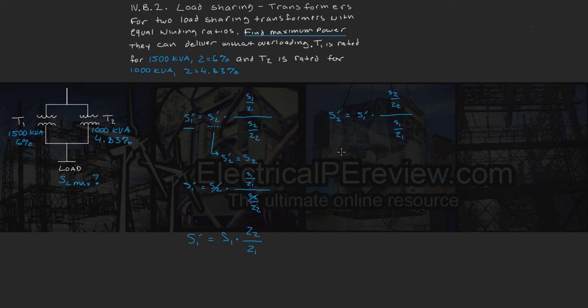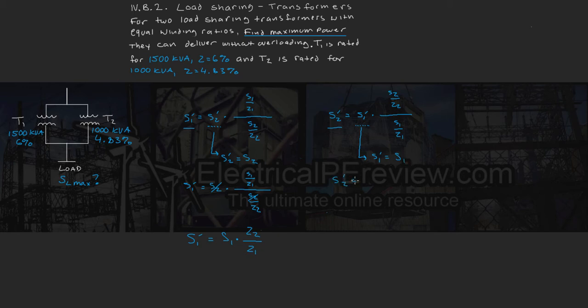Next, we find transformer 2's contribution S2' when transformer 1 is operating at its full load rating S1. So S2' equals S1 times (S2/Z2) divided by (S1/Z1). Again the S1 terms cancel, and we're left with S2' equal to the transformer 2 rating S2 times Z1 over Z2.